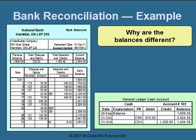When we compare the bank statement balance to our general ledger cash account, you usually find out that they're different. For Video Buster Company, the bank balance on October 31st is $2,050, while the general ledger cash account balance is $1,404.58. Through the bank reconciliation process, we go through and find out why they're different.